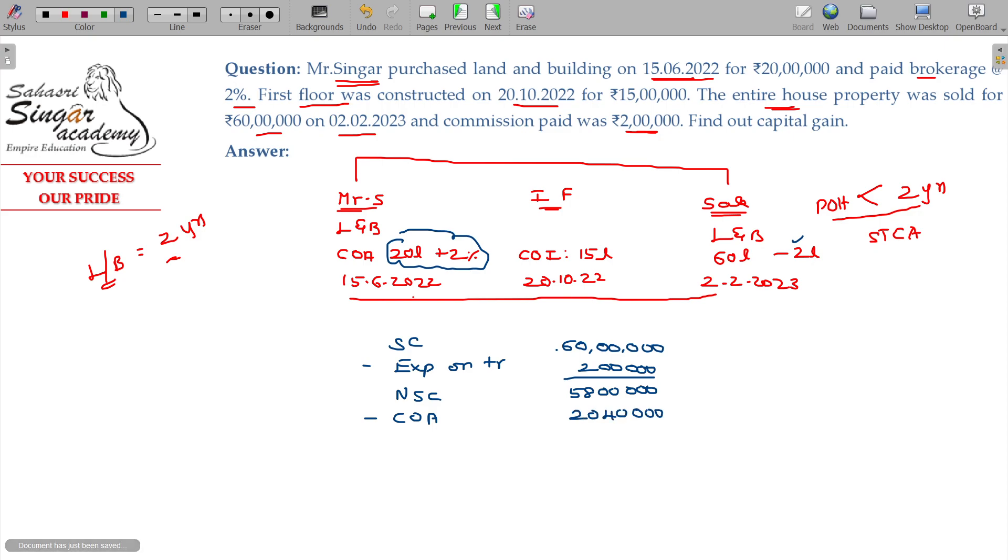Apart from that, any other improvement carried over that should also be deductible. Cost of improvement, that is 15 lakhs.